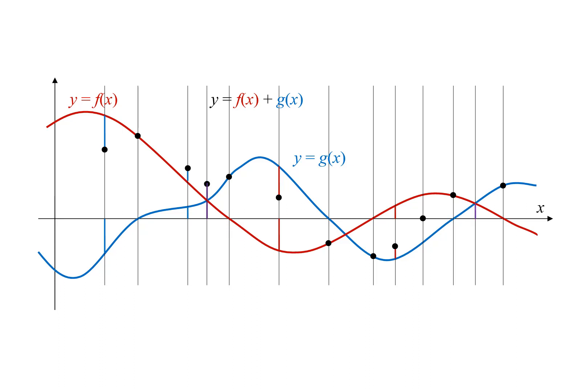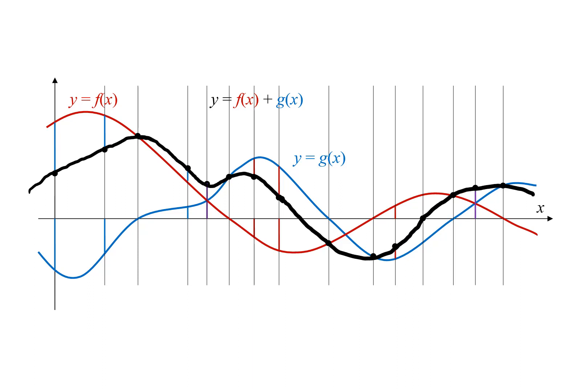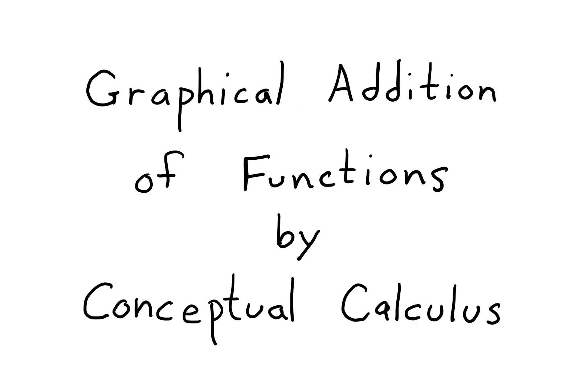We carry on in this way, adding points to our graph until we have a good idea what it looks like. Then we connect the dots to form a curve. This curve shows the function y equals f of x plus g of x. Thank you for watching Graphical Addition of Functions by Conceptual Calculus.